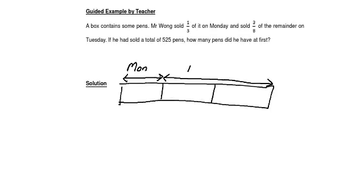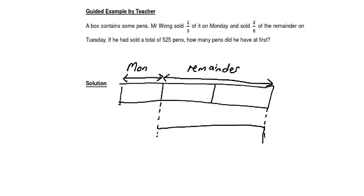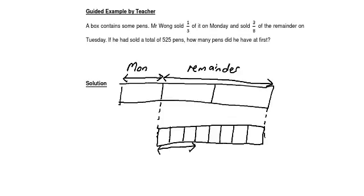3 eighths of the remainder — let me label the remainder. I do a pull-down model. I have the remainder here and pull it down. 3 eighths of the remainder means the 8 tells us to cut the remainder into 8 parts: 1, 2, 3, 4, 5, 6, 7, 8. From here to here is 3 eighths of the remainder, and this 3 eighths is the number of pants sold on Tuesday.